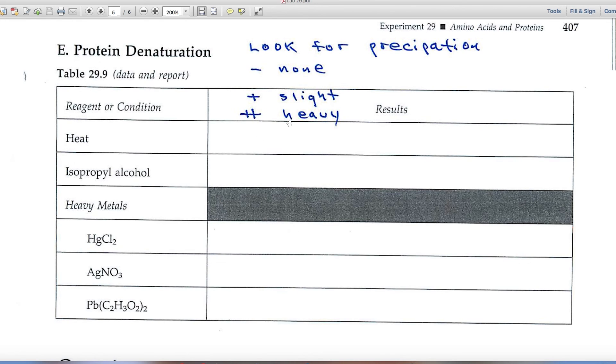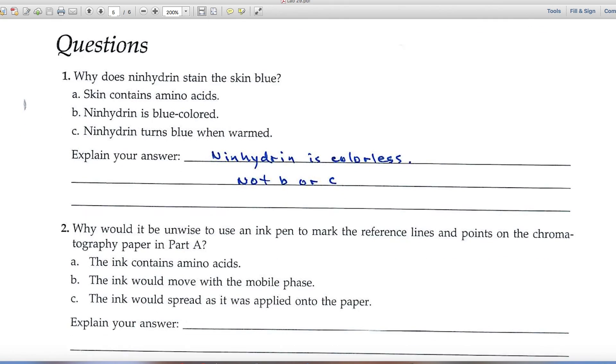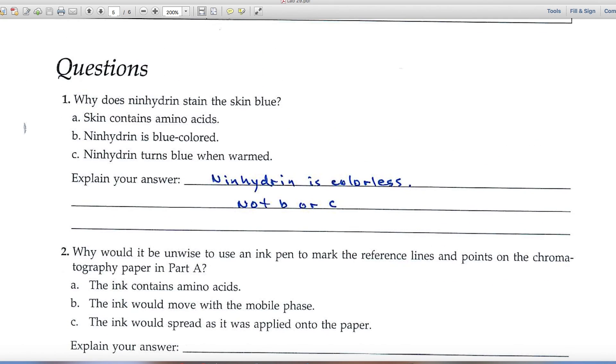So here you look for protein precipitation or a solid. In other words, if there's a heavy solid, plus plus, slight solid, a plus. And if there's no solid or very, very little, put a minus. And that completes the experiment part of the lab.